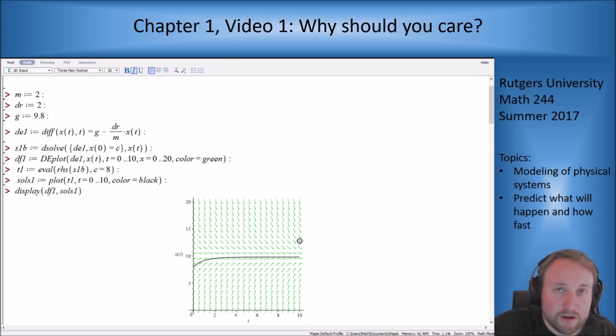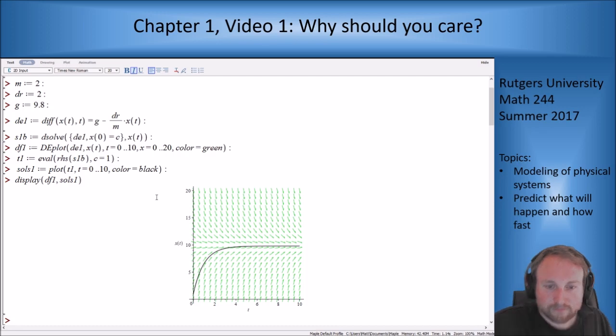If I start at about eight meters per second, I get a curve that looks like this approaching a terminal velocity. If I start a lot slower, like at one, I still approach the same velocity but it takes me longer to get there. If we start above at 15, we'll slow down until we get to terminal velocity as well. This direction field and the differential equation tell us that in absence of any other forces, it's going to approach the terminal velocity of the system.